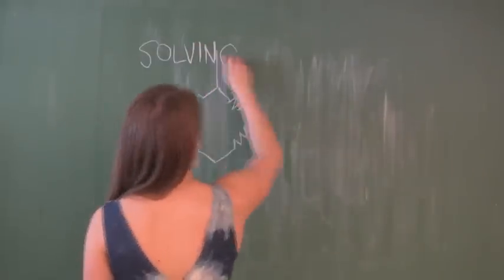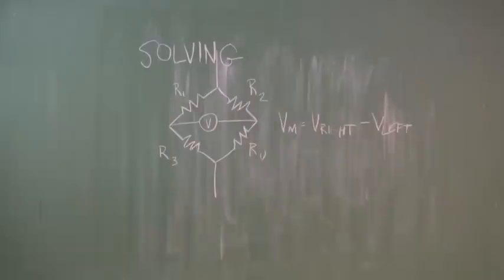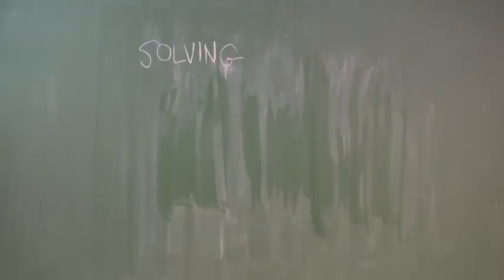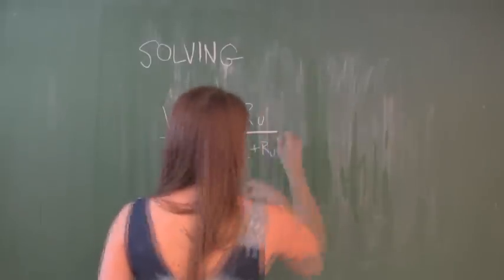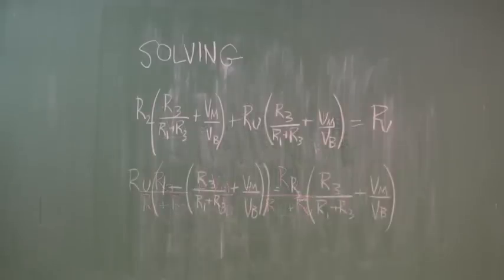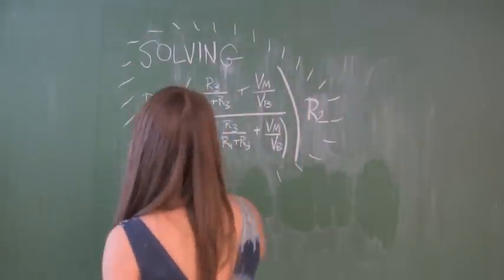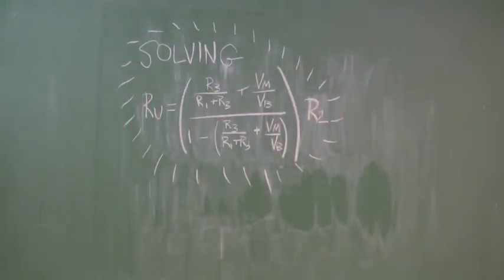Now that we have a formula for each voltage, we can solve for RU algebraically. The voltmeter gave us the difference between Vleft and Vright. With that, we know that Vm, the voltage we read from the voltmeter, is equal to Vb times RU over R2 plus RU minus R3 over R1 plus R3. A few steps of algebra later, we get a formula for RU. This is the value of our resistance measurement. We've also analyzed it symbolically, so we can just plug values into a formula in the future.